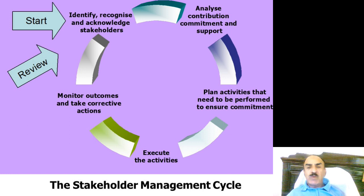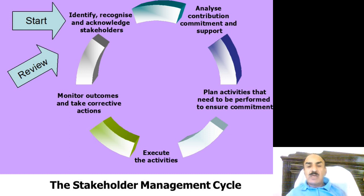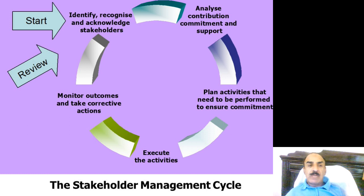The stakeholder management cycle is a stepwise approach. The first and most important step is to identify and recognize stakeholders — the people, communities, and groups that can positively or negatively affect project performance and objectives. Once identified, you analyze their contribution, commitment, and support. Then you plan activities to ensure commitment from different stakeholders. You execute those activities, then monitor the results, and use the feedback to further improve your stakeholder management process.